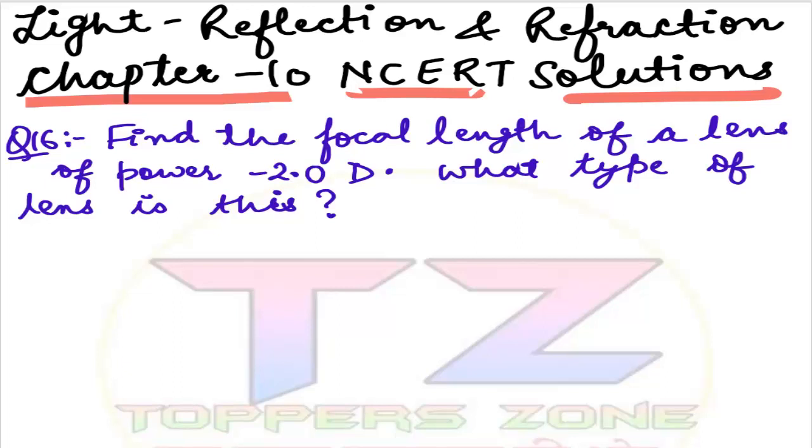Hello students, welcome to Toppers Zone. Today we are going to talk about Class 10 Chapter 10: Light - Reflection and Refraction. We are going to see NCERT final exercise solutions in this video. If you are new to our channel, then subscribe and press the bell icon so you can get notifications. See the video to the end, and if you have any doubt, you can join our Telegram discussion group or WhatsApp group. You will find the link in the description box.